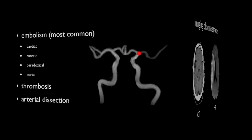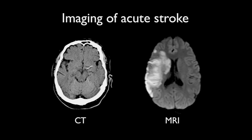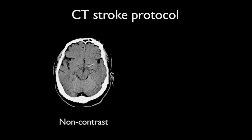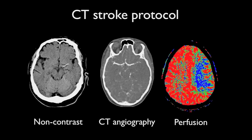Imaging of acute stroke is performed either with CT or MRI. The majority is performed with CT, although MRI is in fact more sensitive. The reason is mainly due to availability of MRI and the ability to get a patient in and out of the CT scanner rapidly without concern for MRI-compatible resuscitation equipment. The mainstay of imaging is non-contrast brain CT, although increasingly this is being supplemented with CT angiography and CT perfusion.